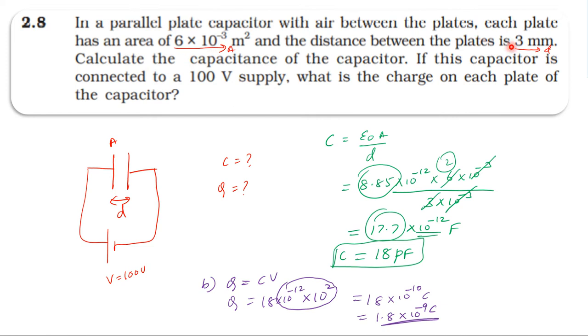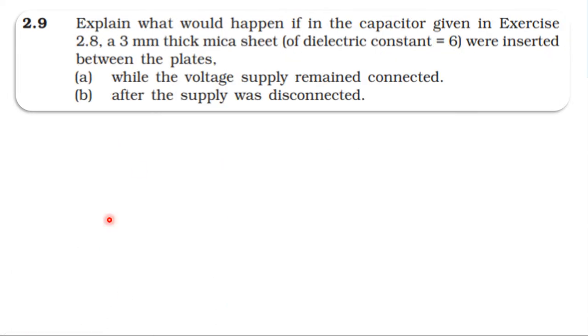That is the 2.8 problem. An air capacitor with plate area 6×10^-3 m², distance between the plates 3 mm, potential difference 100 V connected. The capacitance is 18 picofarad.